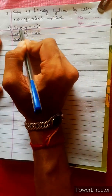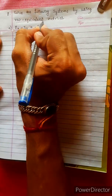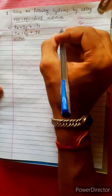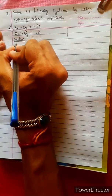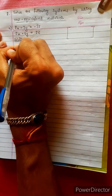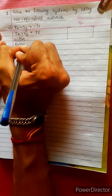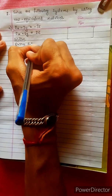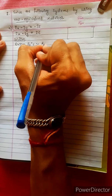Solve the following system by using row equivalent matrices. Row equivalent matrices is the formula. Start writing the given equations in augmented form.